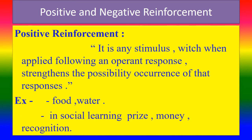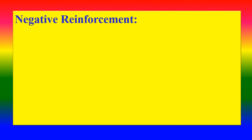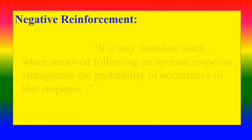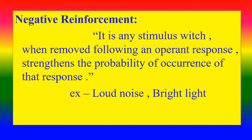In social learning, examples of positive reinforcement include praise, money, and recognition. Negative Reinforcement is any stimulus which, when removed following an operant response, strengthens the probability of occurrence of that response. Examples include loud noise and bright light.